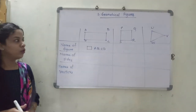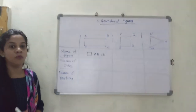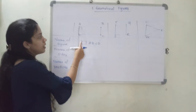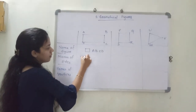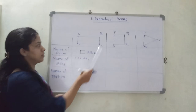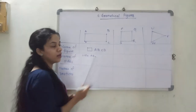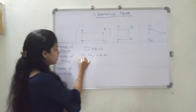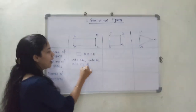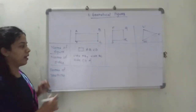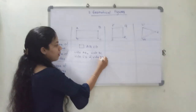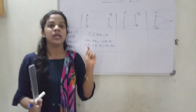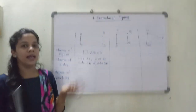Now, the name of the sides. You can see the sides present here. This is one side starting from A and ending at B, so we say side AB. The next side starts from B and ends at C, so it is side BC. The other side is CD, so we say side CD. And the last one is side DA. Always remember to use the word 'side': side AB, side BC, side CD and side DA.